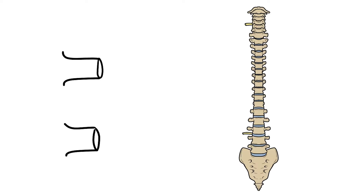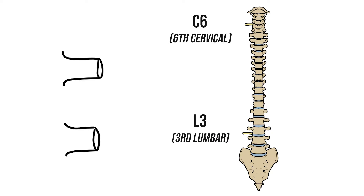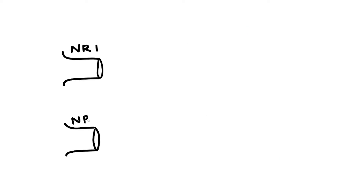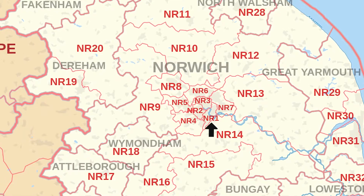First I'd like to start with a simple overview. On the left we'll just draw two nerve roots. These are named after the level they leave the spinal cord, with a letter for the region and a number for the level — for example C6 or L3. I'm going to name these NR1 and NR2 after two of the best postcodes.